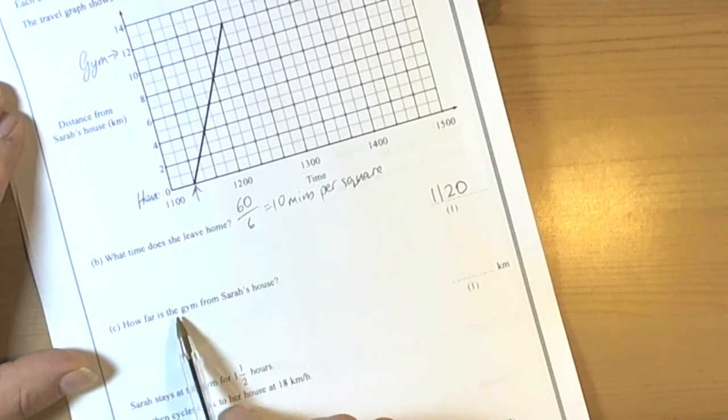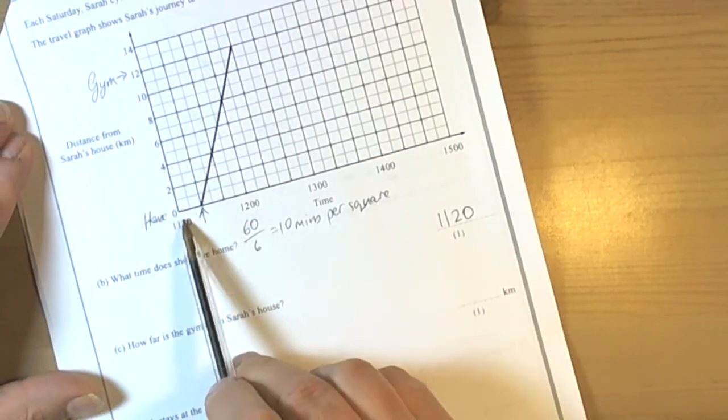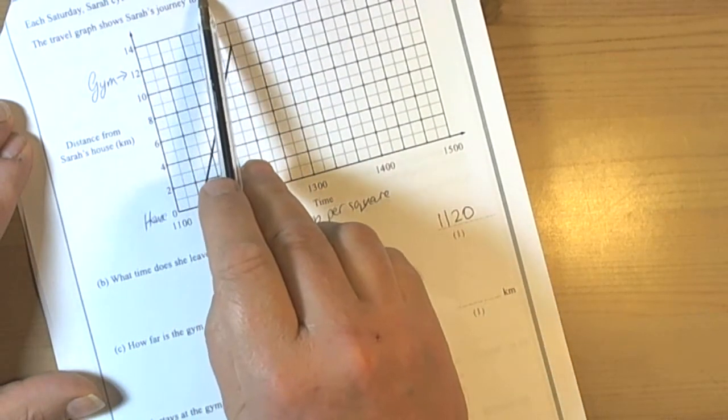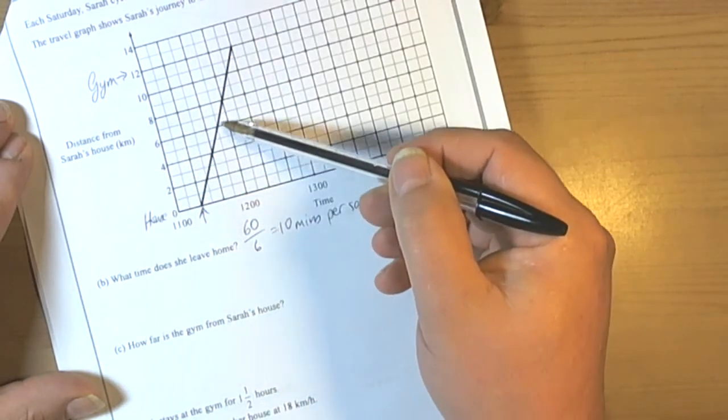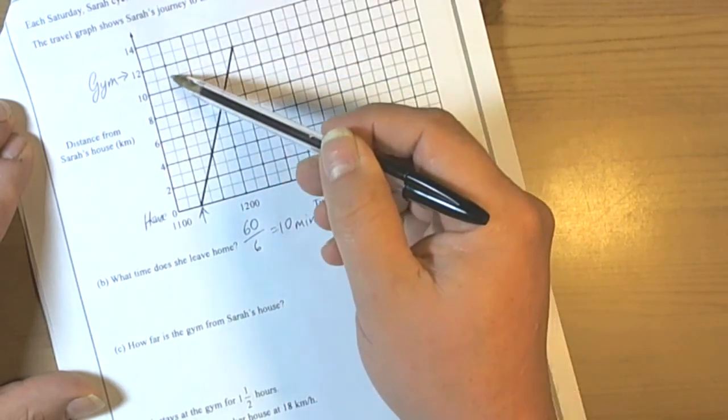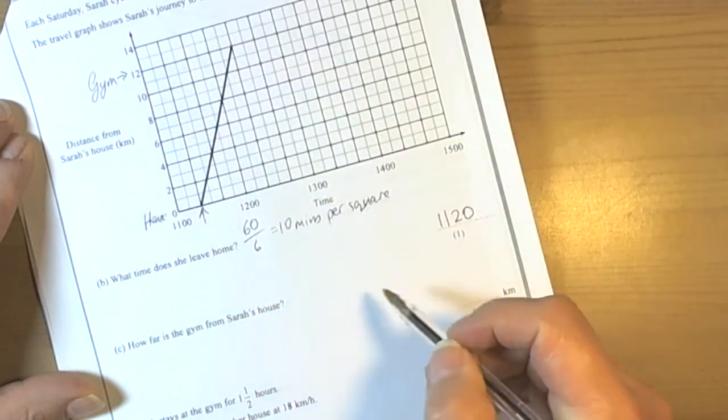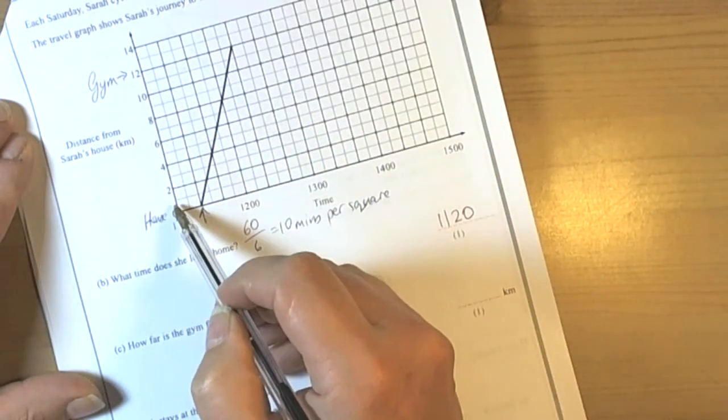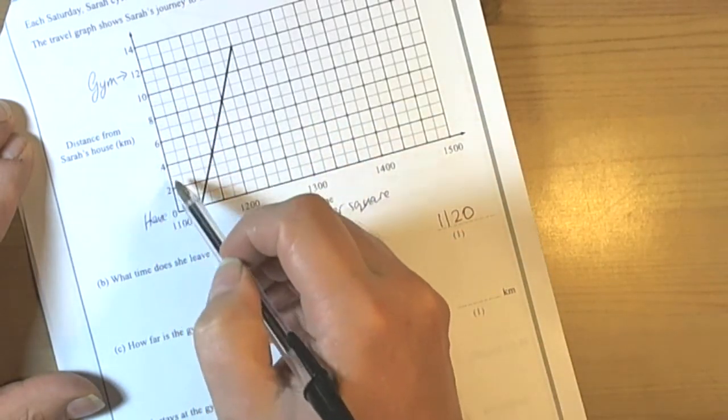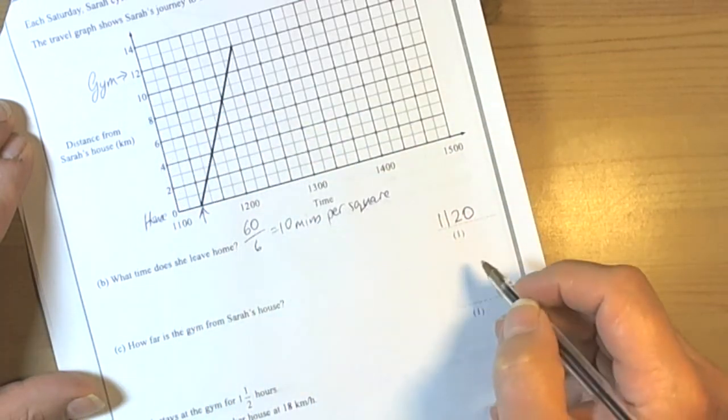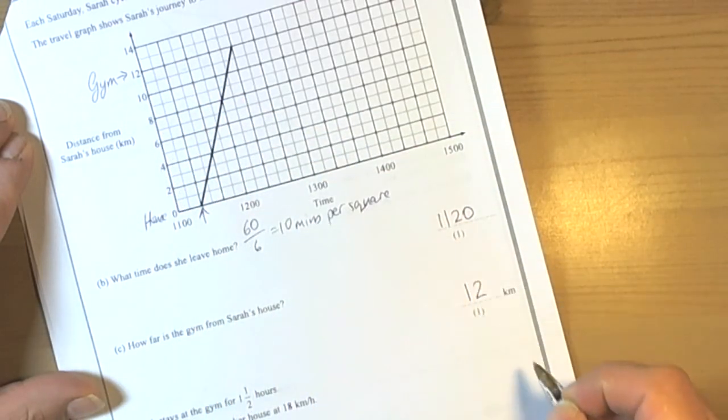Next part of the question, how far is the gym from Sarah's house? Well it says that she travelled straight from the house to the gym. So like we pointed out earlier, the gym must be here. So 12 kilometers away from the house because the scale here is how far she is away from the house as she goes along. So it's going to be 12 kilometers.